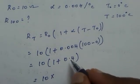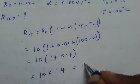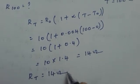It is 10 into 1 plus 0.4 is 1.4. So your RT value is equal to 14 ohms.